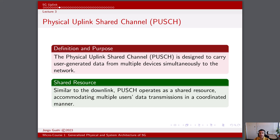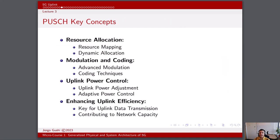The network dynamically schedules resources for PUSCH based on the user's needs and channel conditions, ensuring efficient use of available bandwidth. The Hybrid Automatic Repeat Request is employed to improve reliability: if the received data is corrupted, the UE retransmits the erroneous parts, enhancing overall data integrity. PUSCH also benefits from MIMO technology and beamforming — MIMO exploits multiple antennas to improve signal quality and increase data rates, while beamforming focuses transmission power in specific directions, enhancing the signal-to-noise ratio and extending coverage. Resources for PUSCH are allocated in both the time and frequency domains to avoid interference and optimize spectrum utilization.